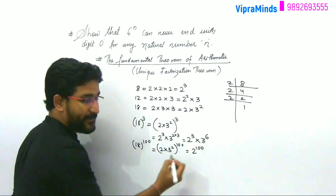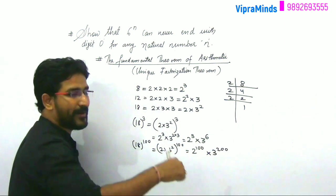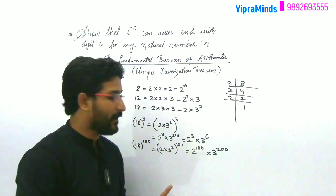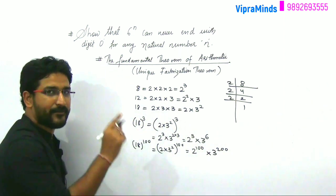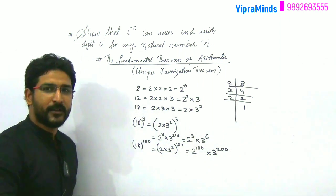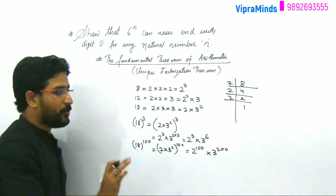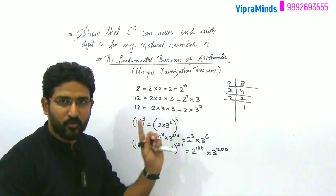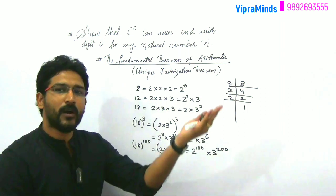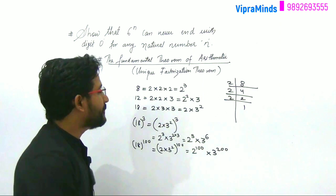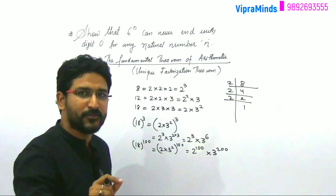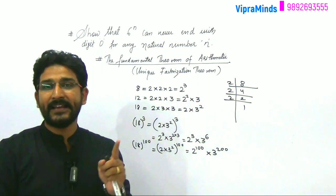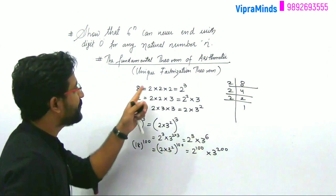Now what about 18 raised to 100? It becomes 2 raised to 100 into 3 raised to 200. So 2 appears 100 times and 3 appears 200 times. But still the factors are only 2 and 3 — no other prime factor will come. No matter what power you take — 100, 1000, 10000, 525 — the base value 18 will always have only 2 and 3 as its prime factors. This is known as the Unique Factorization Theorem.